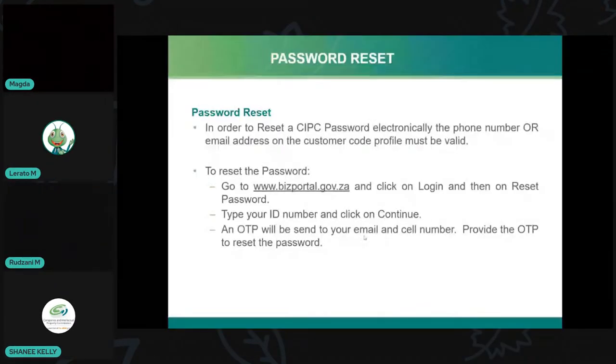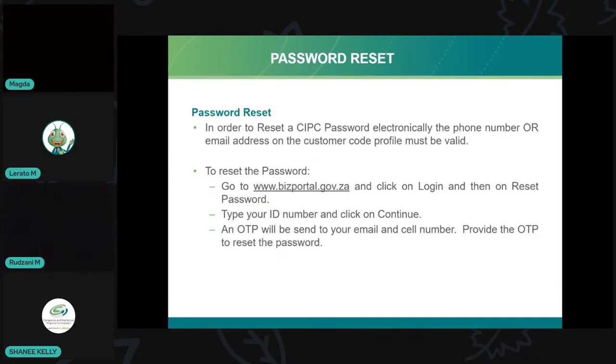Now for password reset - a lot of customers only use the CIPC portal once a year so they forget their passwords. The easiest way to reset your password is to use the Biz Portal. If your cell phone number or email address is up to date, it's easier to use this portal to reset it.